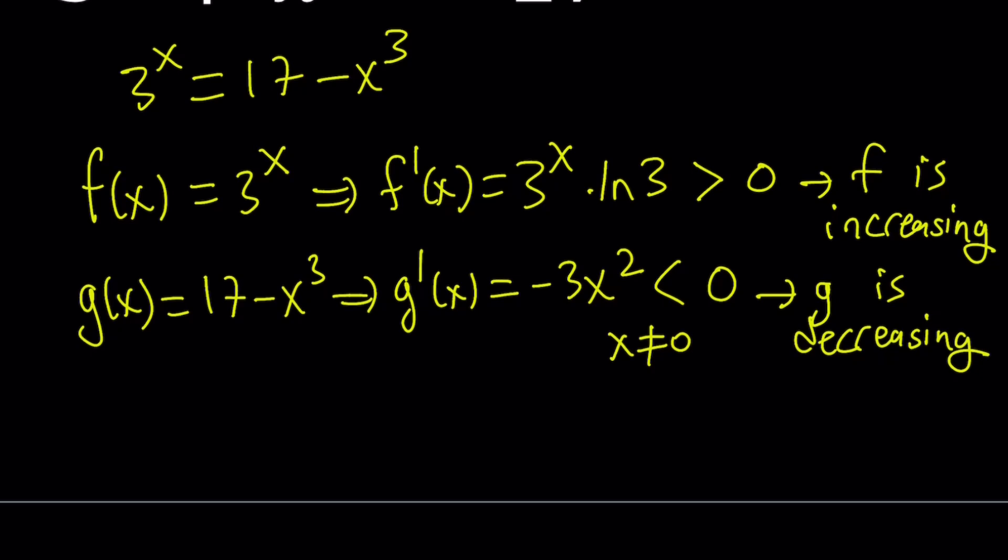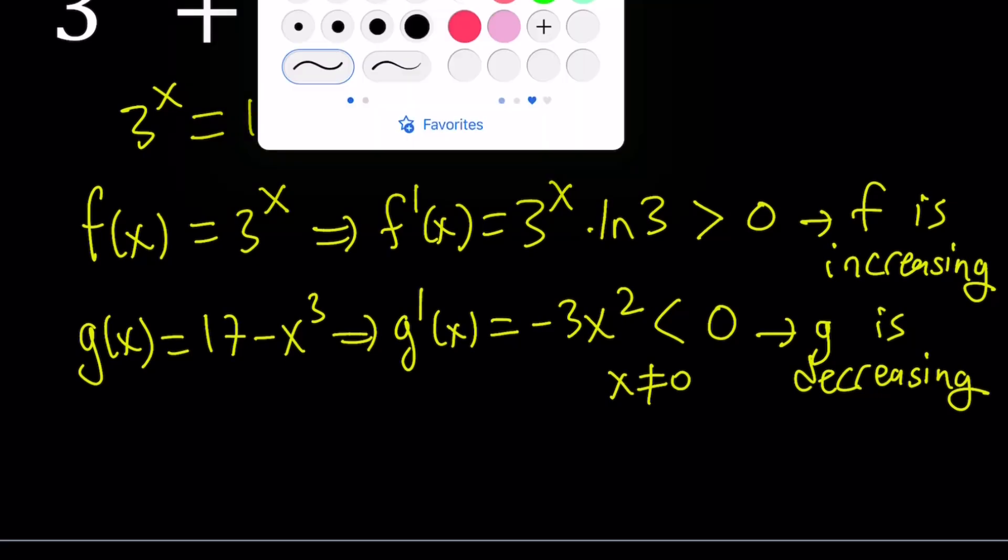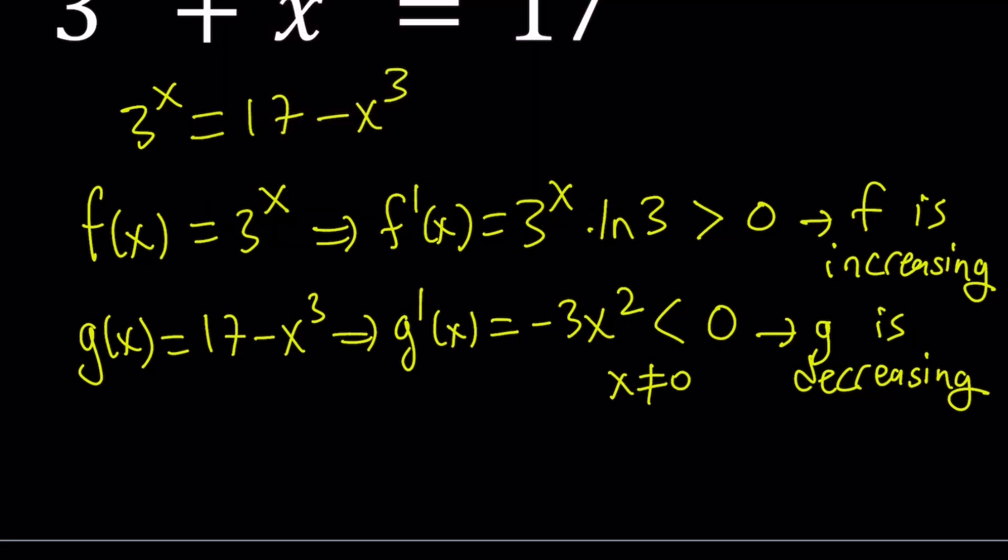So, we basically have a function that is increasing, another function that is decreasing, and they are equal to each other at a certain point, which means there's only one solution. And in this case, that happens to be x equals something. Let's go ahead and find out.